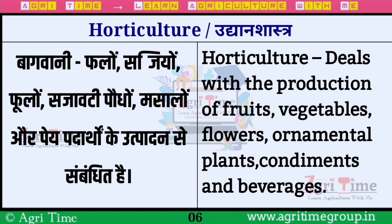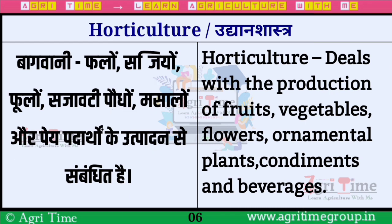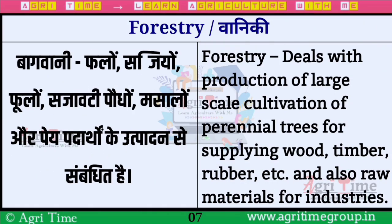अगला branch है Horticulture, यानि कि उद्यान शास्त्र। जिसमें फलों, सब्जियों, फूलों, सजावटी पौधों, मसालों और पेय पदार्थों के उत्पादन का अध्ययन शामिल होता है।